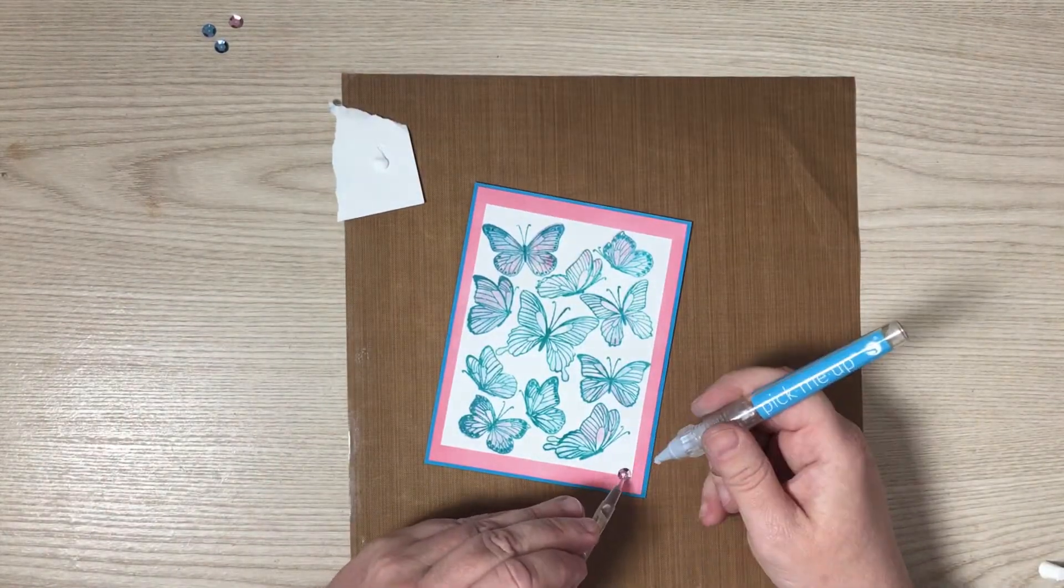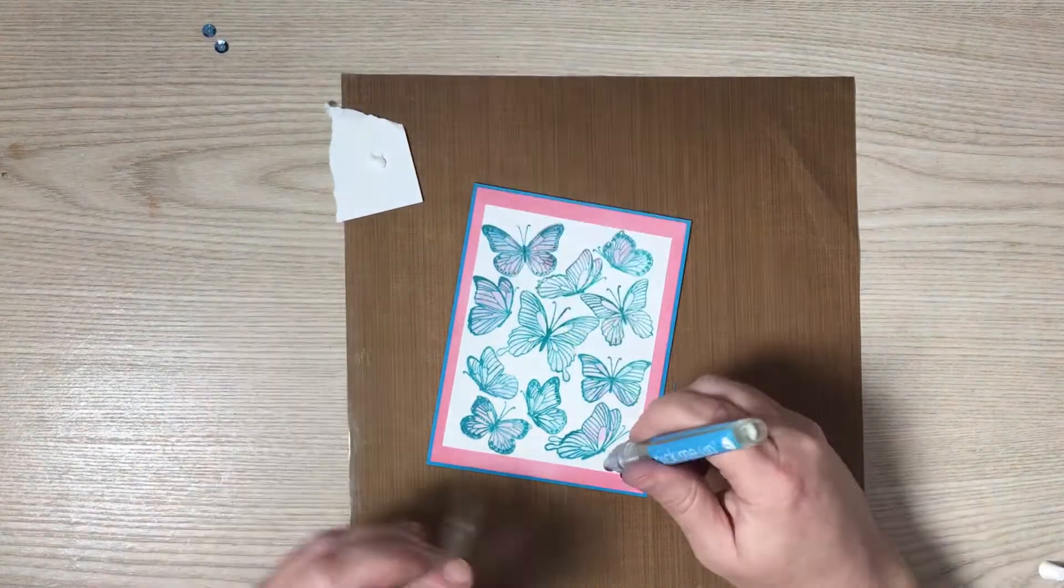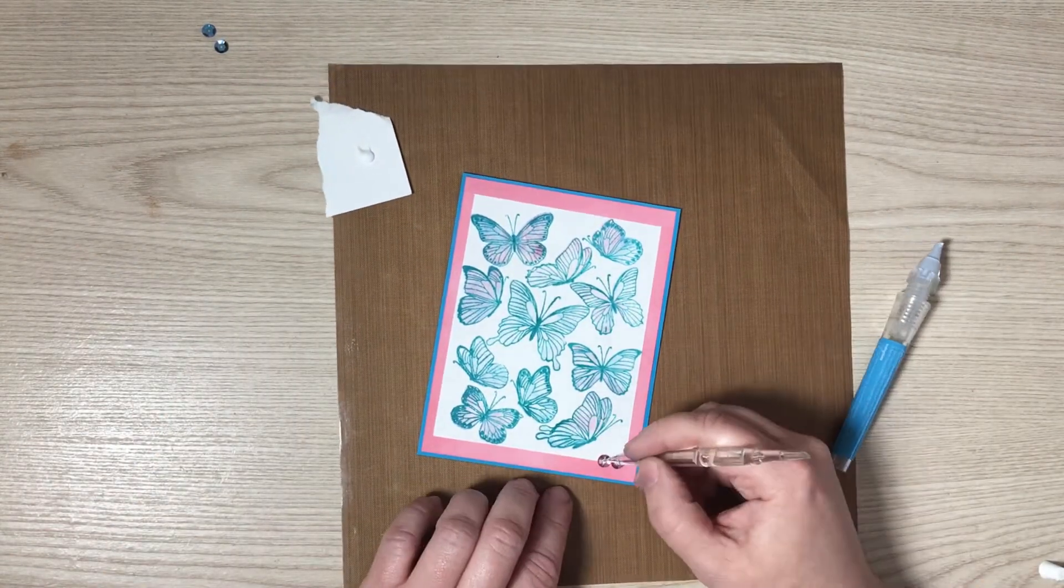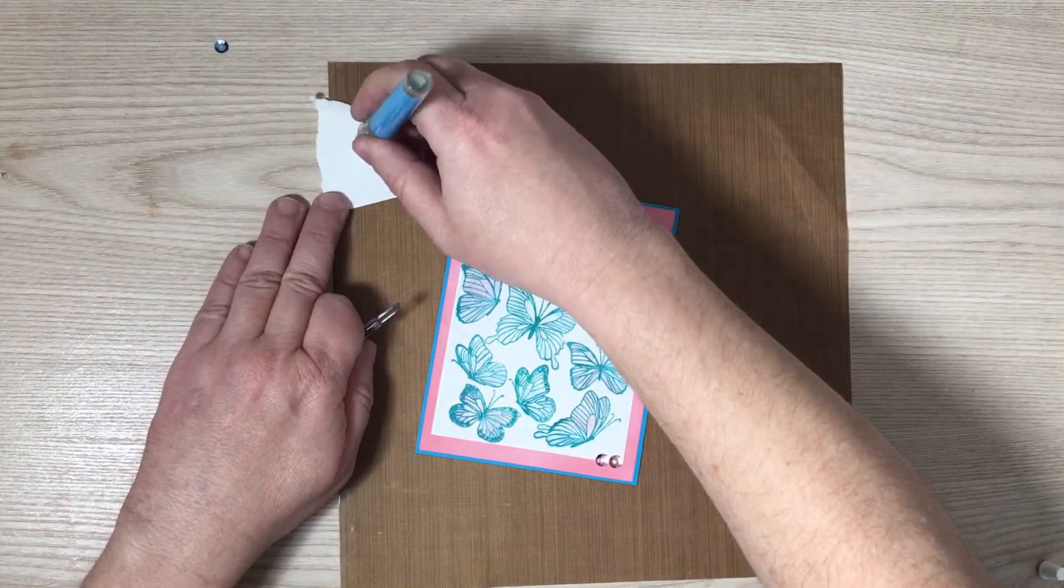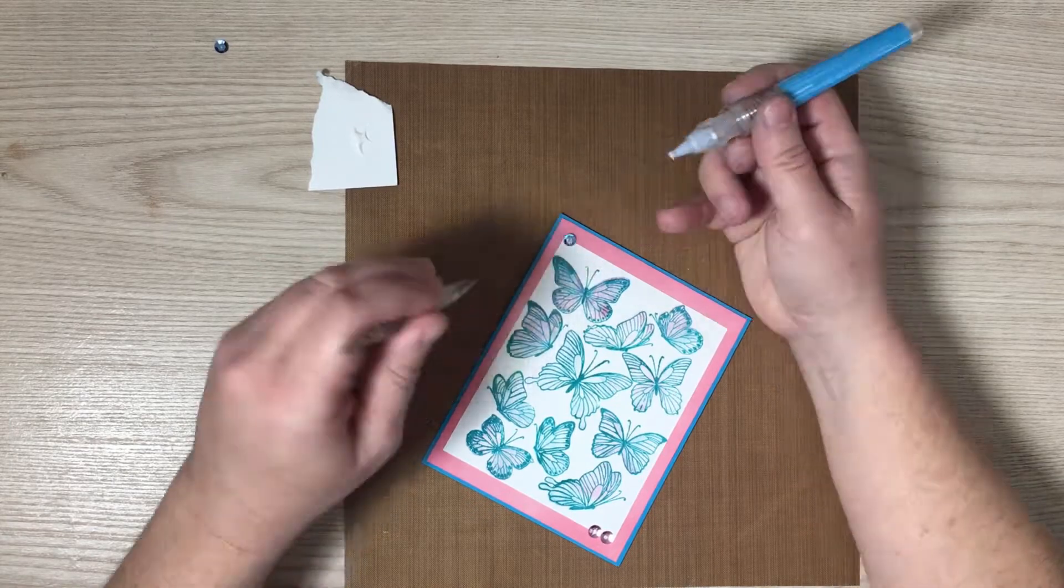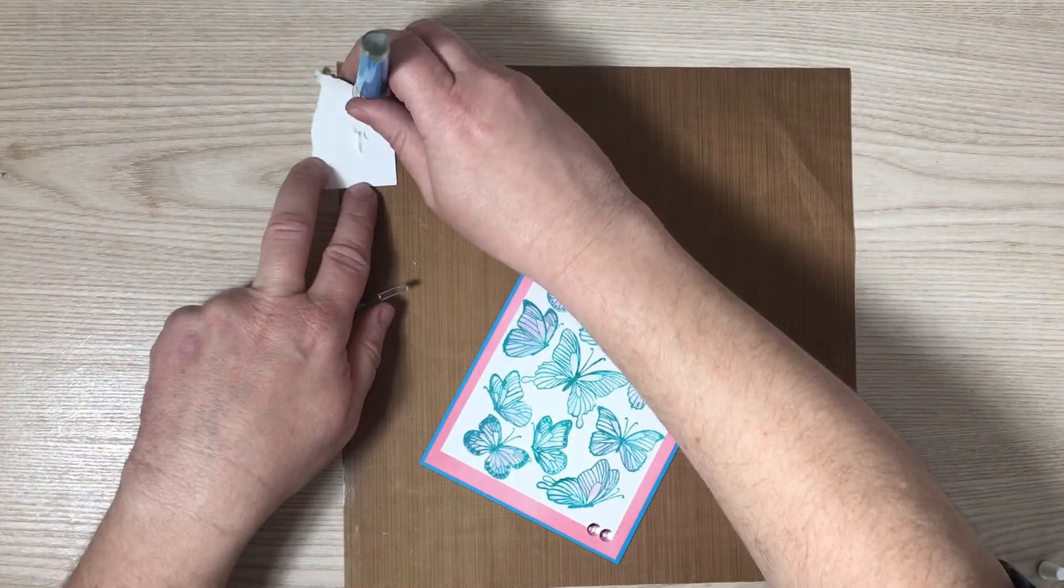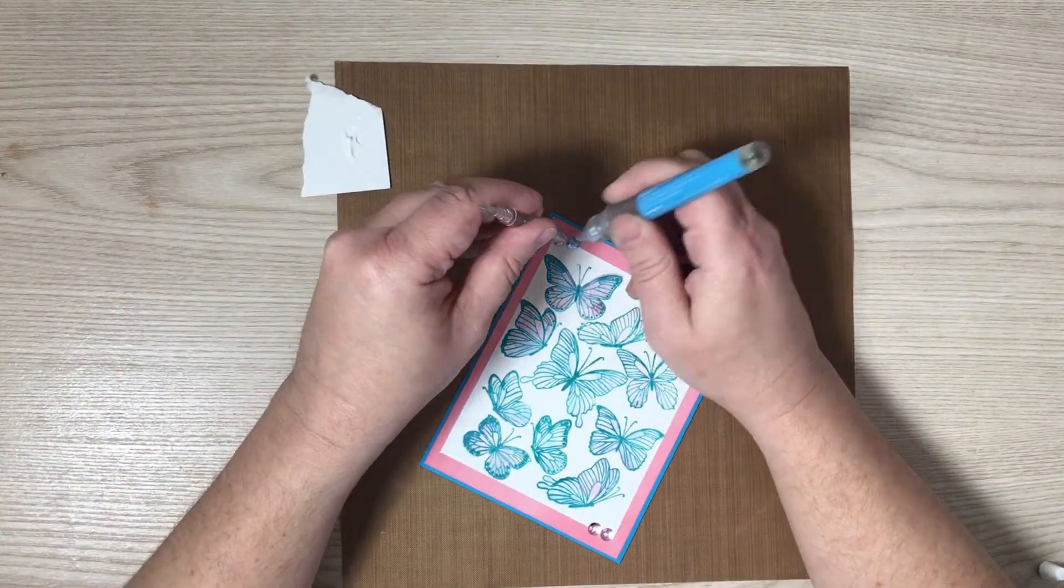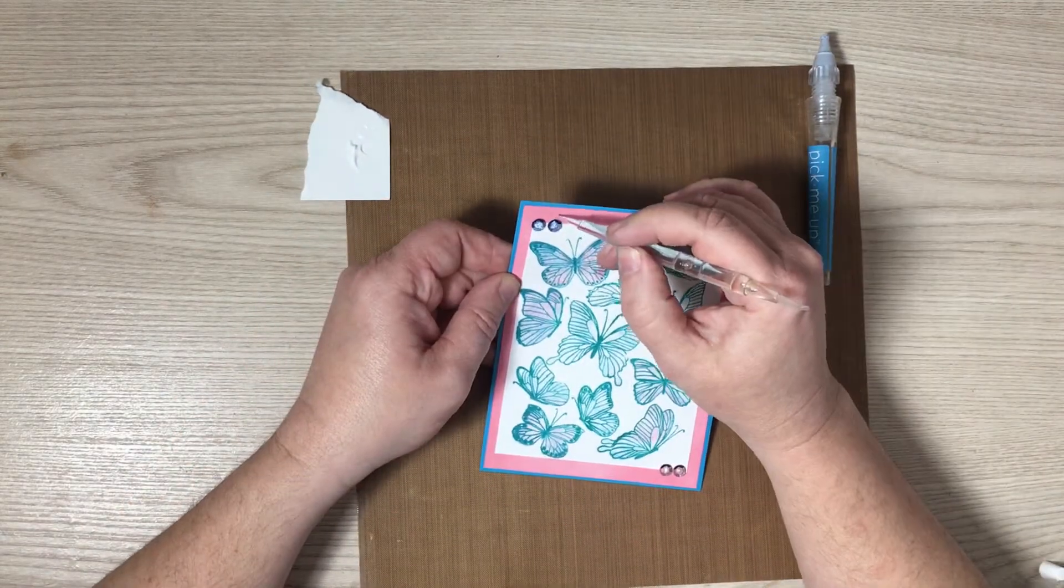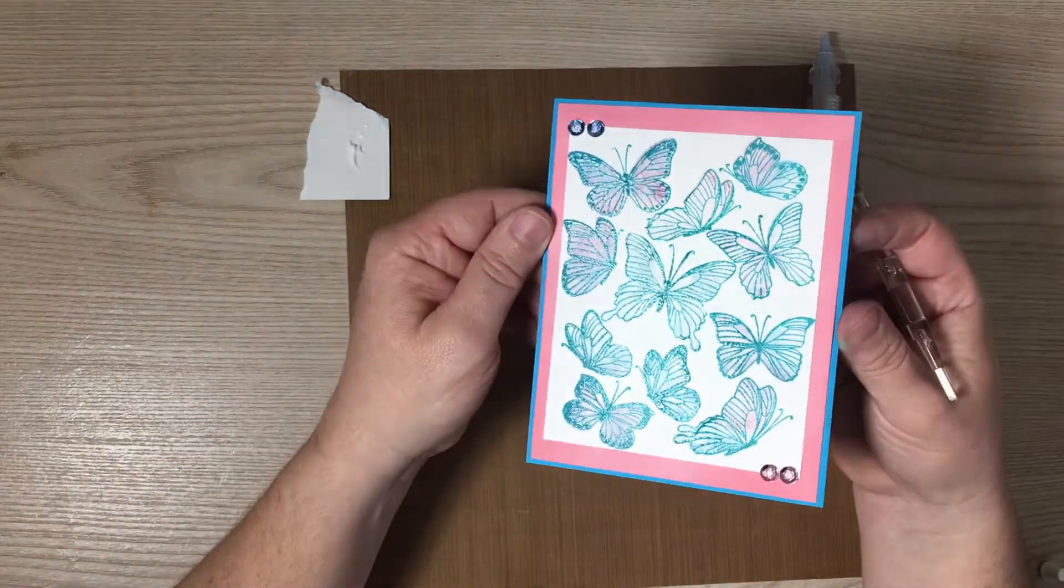So now this card wouldn't be complete if I didn't add some sequins, you know I love me some sequins. So I went ahead and I have two in a black there. They're like a rose gold or a very light pink that I thought matched this really well. And then those are in the bottom right hand corner and then in the top left hand corner I added some very light pale blue sequins.